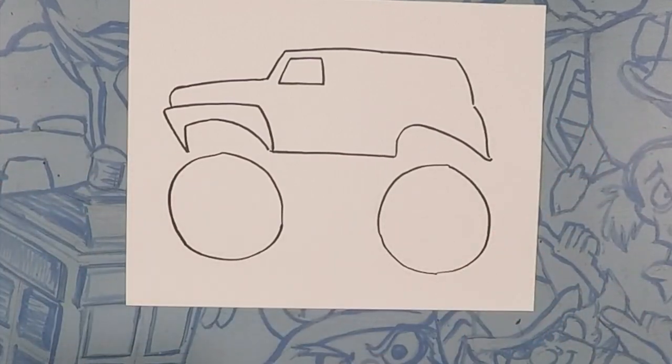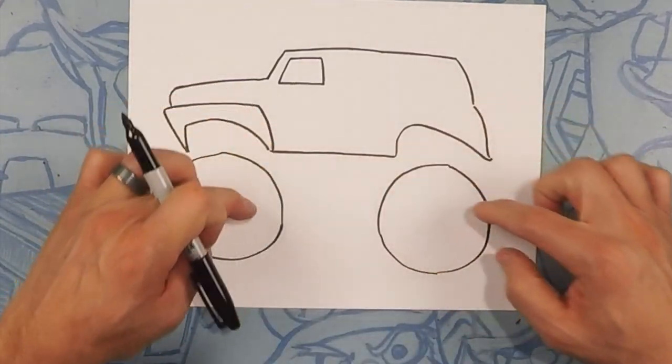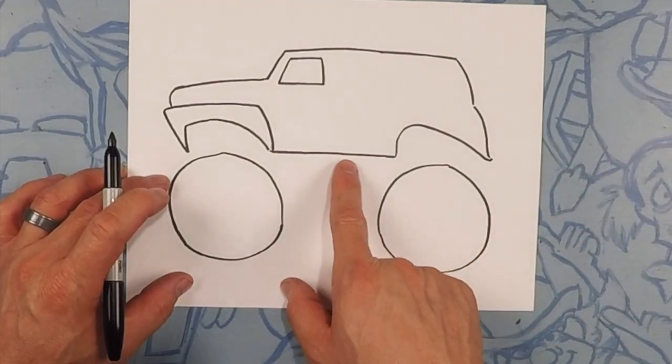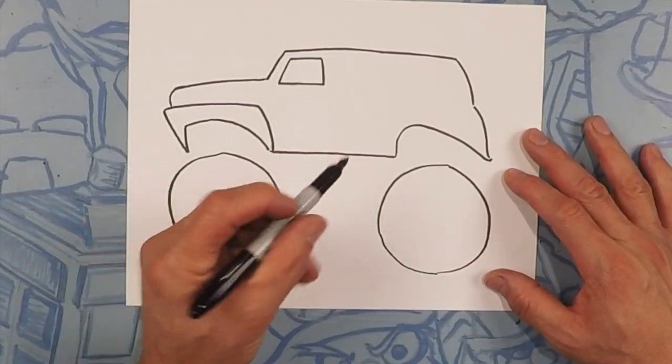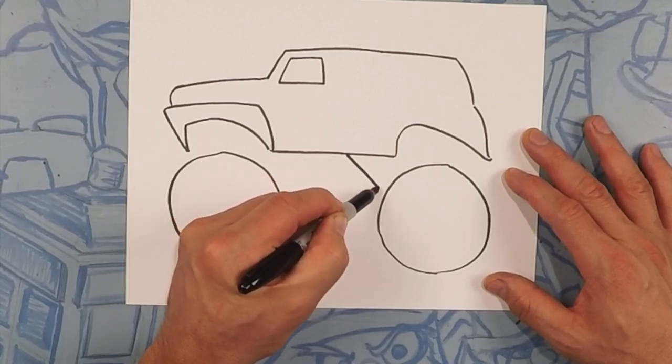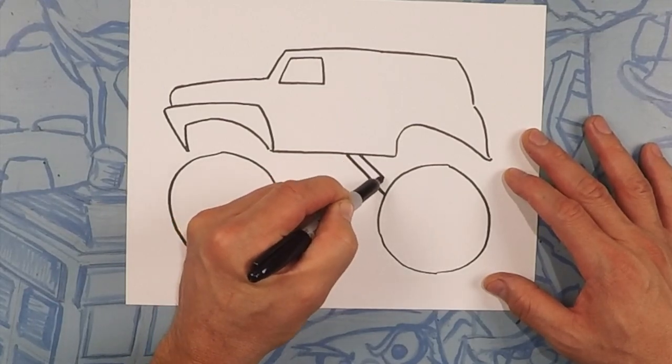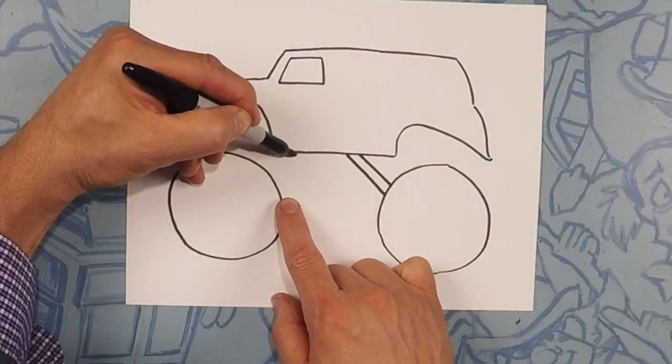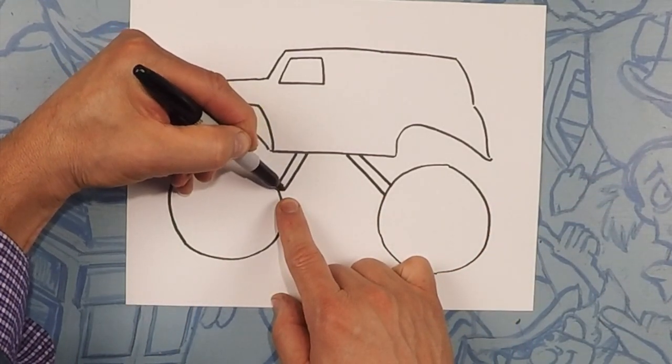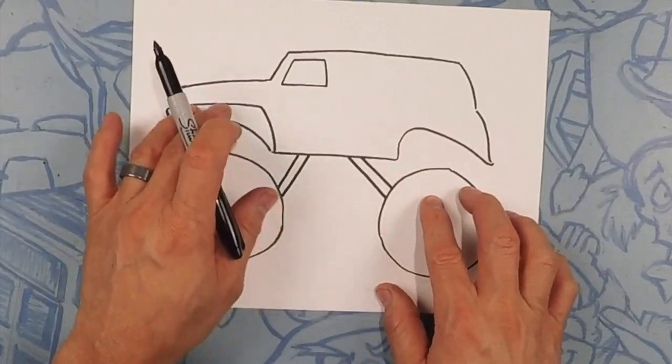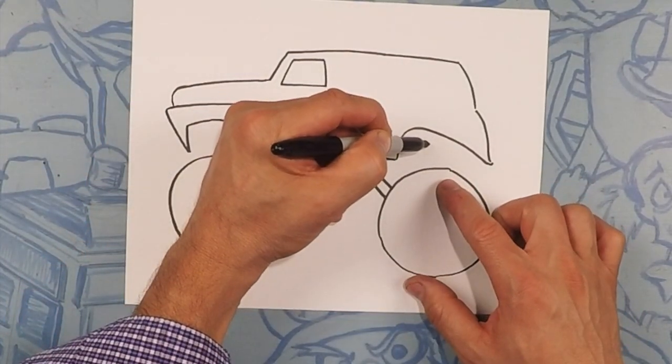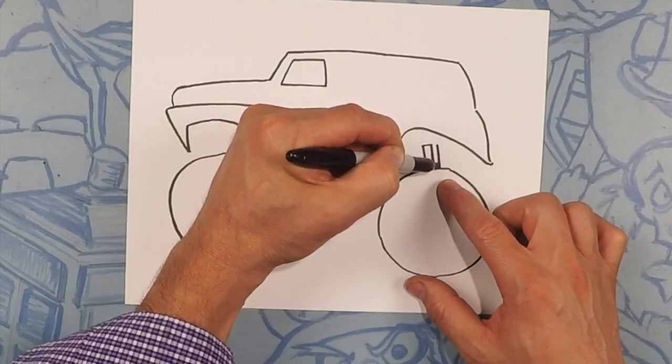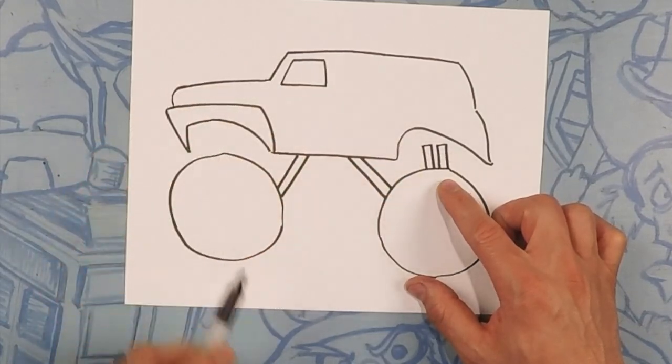So now we have our wheels we're going to draw our shocks. These big monster trucks have tons of shocks going every direction. So let's draw two parallel lines coming from the middle of the body going that way. So one there and one there. So two more going this way. One, two. Perfect. Now we're gonna have double shocks coming up through here. So let's do like a long rectangle. One there and one there.